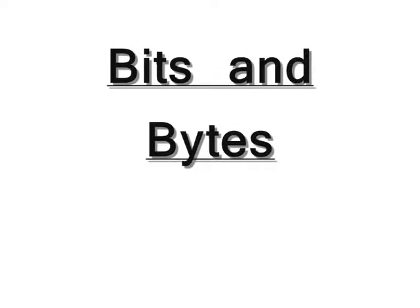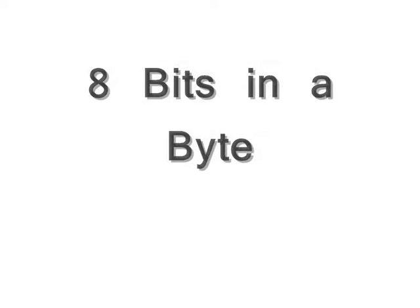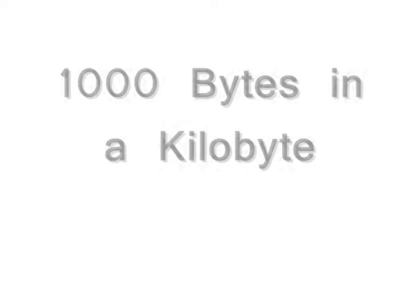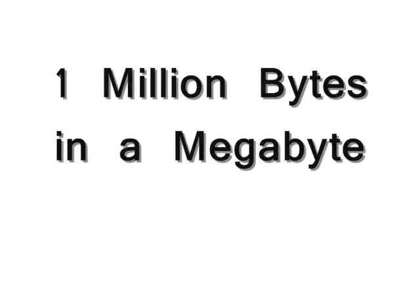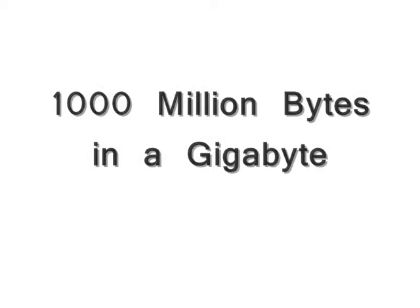Memory is measured in bits and bytes. There are 8 bits in a byte, about 1000 bytes in a kilobyte, 1 million bytes in a megabyte, and 1000 million bytes in a gigabyte.